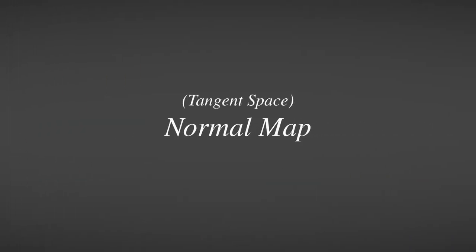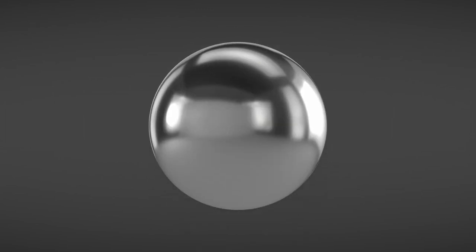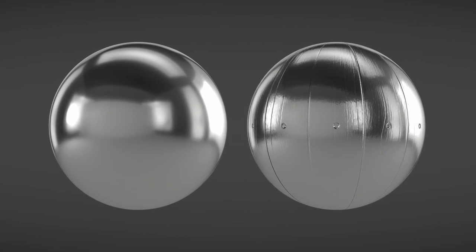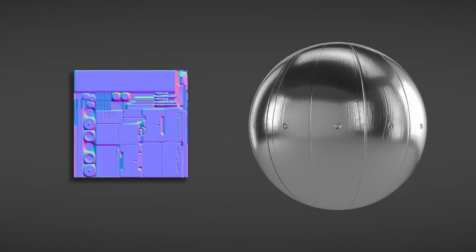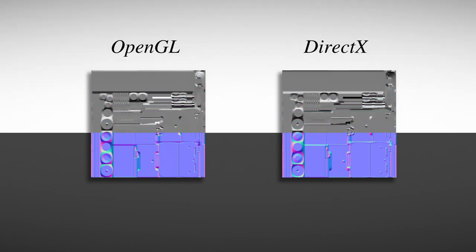A tangent space normal map contains information about where light will reflect based on the direction of the surface normals. You can think of this as a way to pack in extra detail without needing actual geometry. Every render engine uses a specific calculation for their normal maps. The three types are OpenGL, DirectX, and MIKK. OpenGL and DirectX are basically the same except the green channels are flipped, while MIKK is the industry standard and compatible with most 3D software. Either use the type that your renderer uses, or just stick with MIKK.